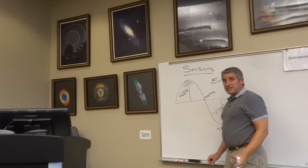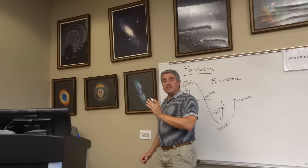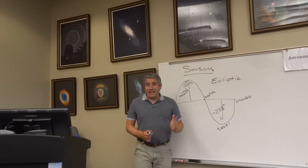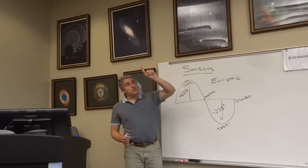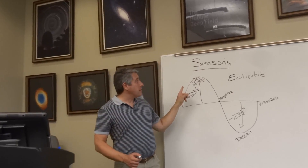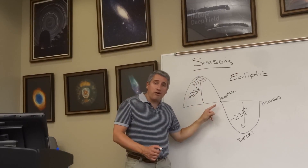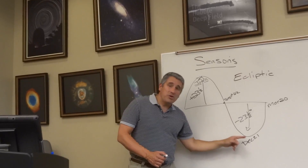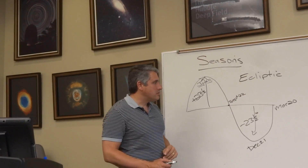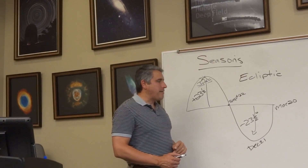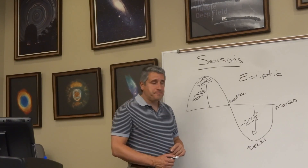To be clear, I'm not saying the sun moves like this over the course of a day. I'm saying that over the course of the year, if you chart the path of the sun, it is high in the summer, medium in the fall, low in the winter, and then back to average in the spring. This path is called the ecliptic.